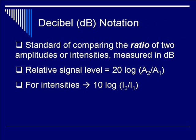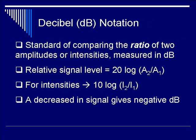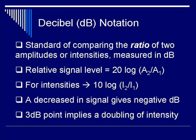For intensities, we can also come up with a decibel notation for relative intensities. This is 10 times the logarithm of I2 over I1. A decrease in signal gives negative decibels, whereas an increase in signal will give positive decibels. Finally, the 3 dB point is frequently mentioned in audio analysis, and it implies a doubling of the intensity.